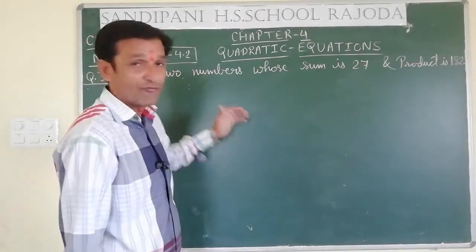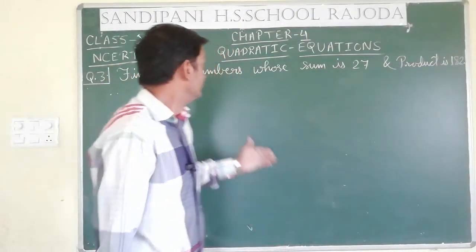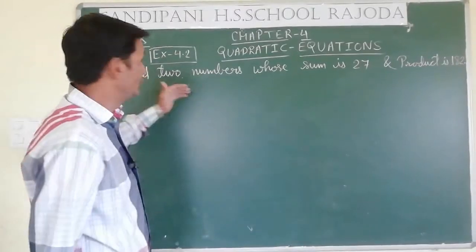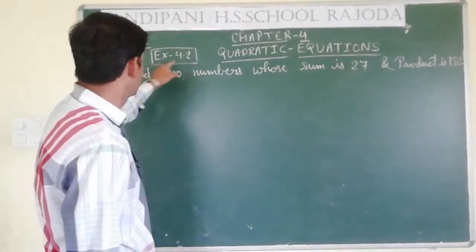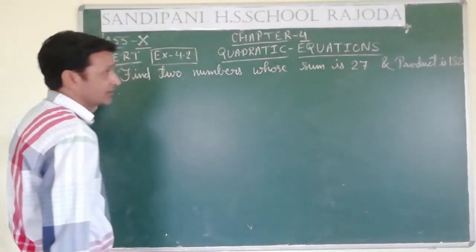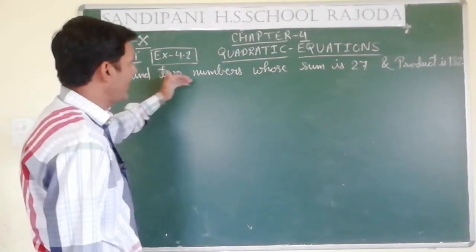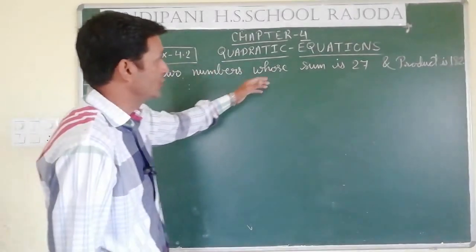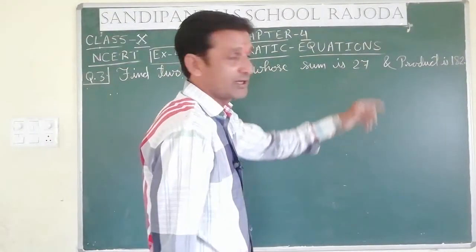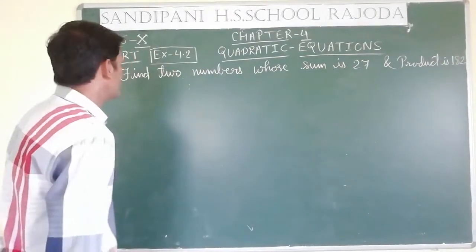Your feedback is of course required. Now let me tell you exercise 4.2 question number 3. The question is: find two numbers whose sum is 27 and product is 182.